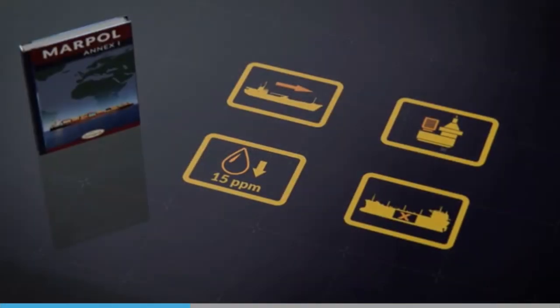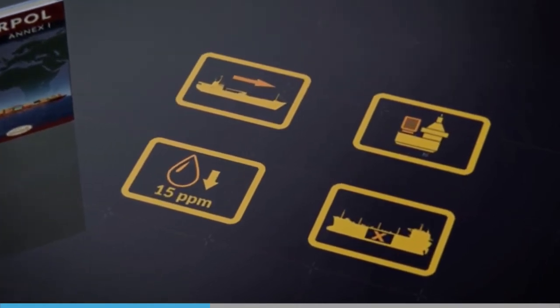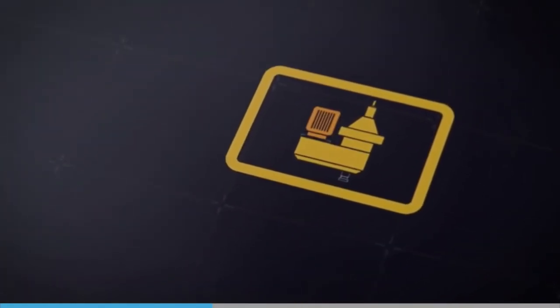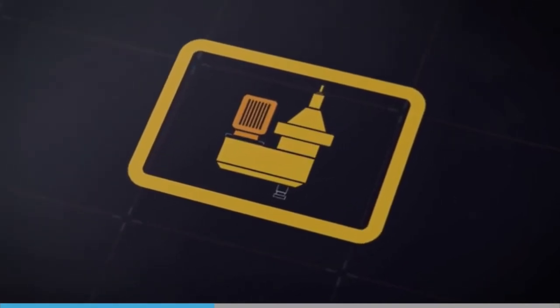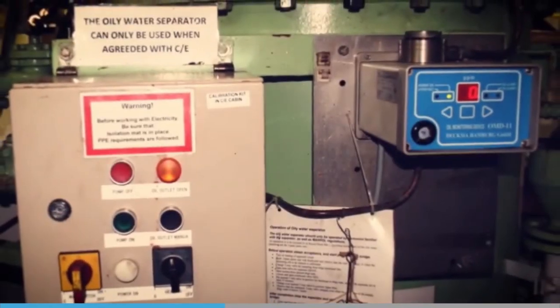We will talk about the special areas themselves in a moment, because some special areas are more special than others. However, in most special areas, the rules for discharging machinery space bilges are about the same as anywhere else. The difference lies with the requirements for the bilge water separator itself. Essentially, if you are going to use a bilge water separator in a special area, then it must have an automatic alarm and stopping device.